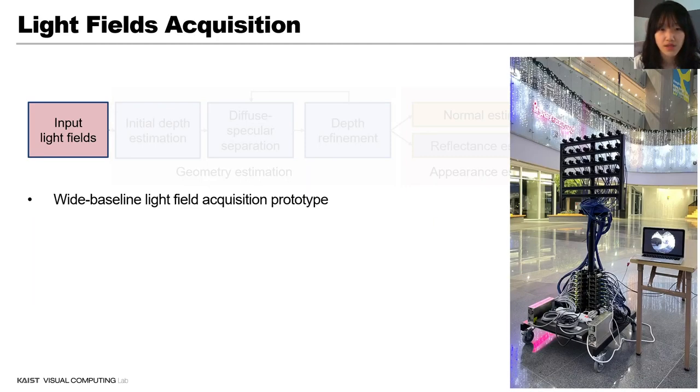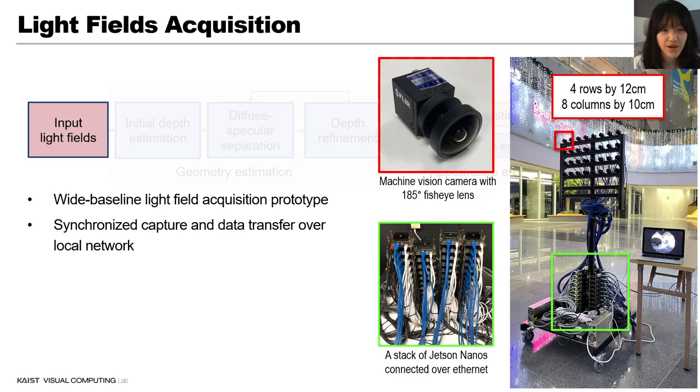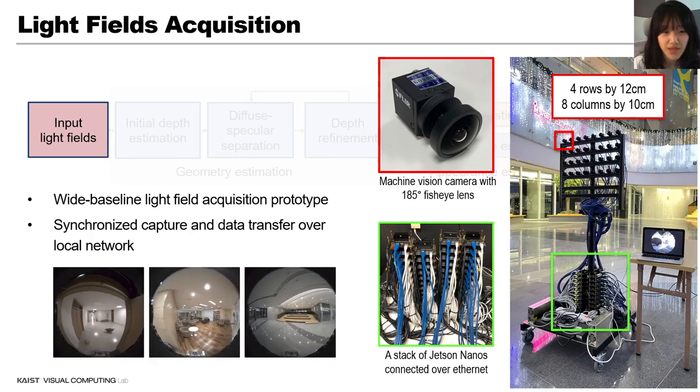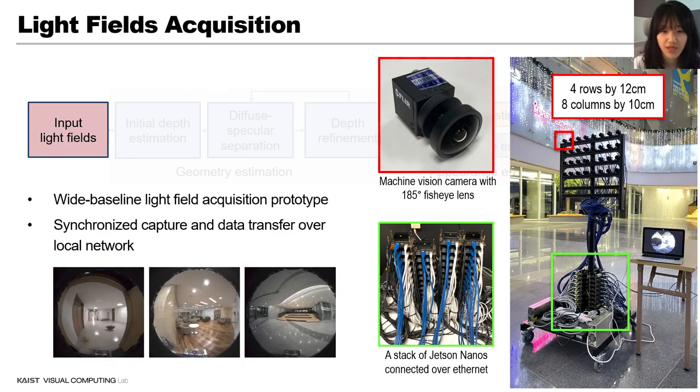We built a wide baseline light fields acquisition prototype with 4x8 machine vision cameras equipped with fisheye lenses of 185 degrees field of view. This device provides synchronized capture and data transfer over a local network. Micro-processor called Jetson-nano manages all of the acquisition configurations and data. These sub-aperture images are indoor scenes captured by this prototype.